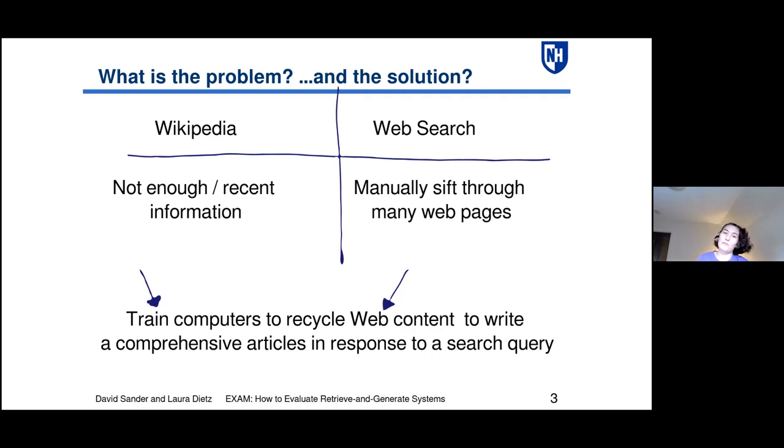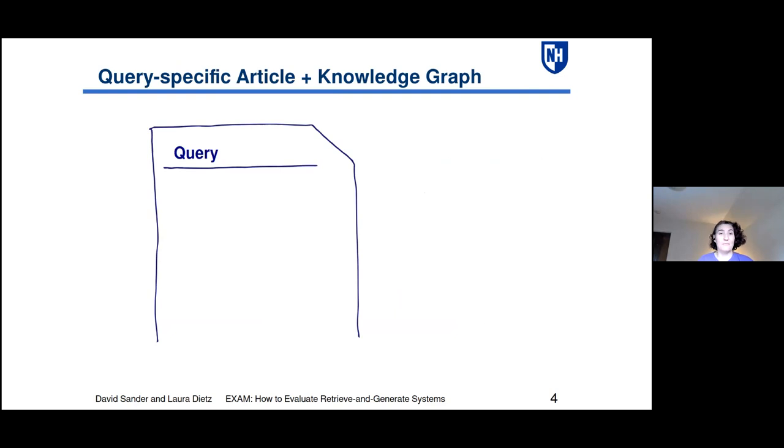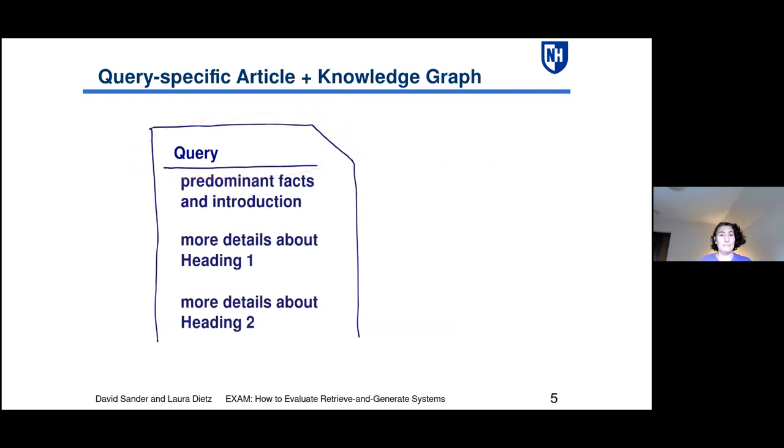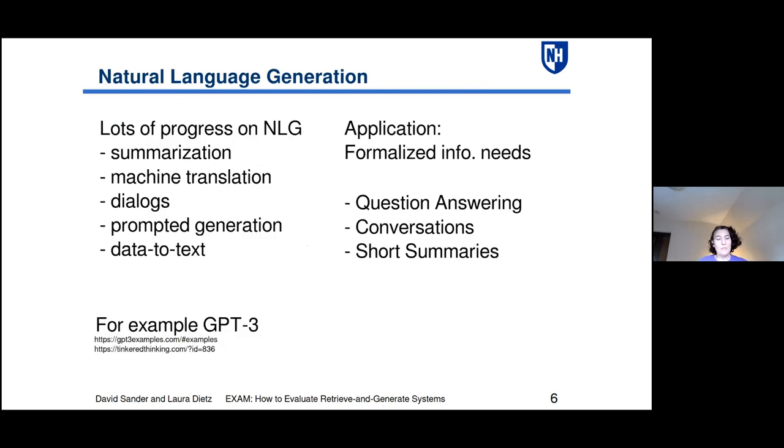I think we should be able to train computers to recycle web content to write a comprehensive article in response to a search query, mimicking the style of Wikipedia as one example. The way I think it should work is that the user gives us a query. This query becomes this imaginary title of an article, and our algorithm is supposed to write the rest. There has been a lot of progress lately in natural language generation, but the progress in NLG is often focusing on formalized information needs. These are needs that have a very precise question for which there will be a very precise answer or short answer. That happens in question answering conversations. Usually your smart speaker makes use of this.